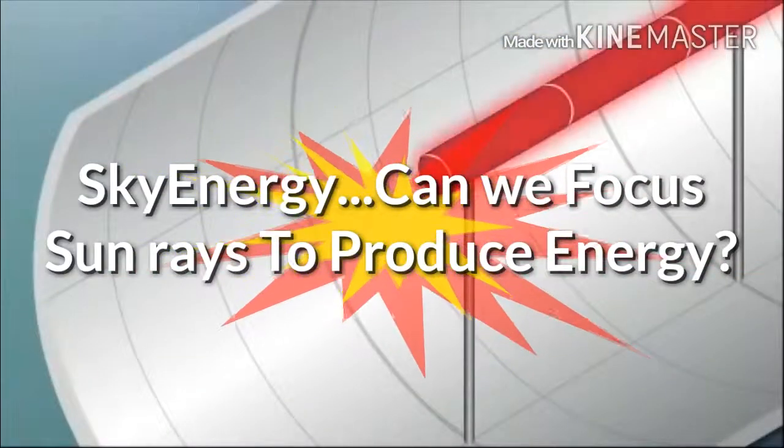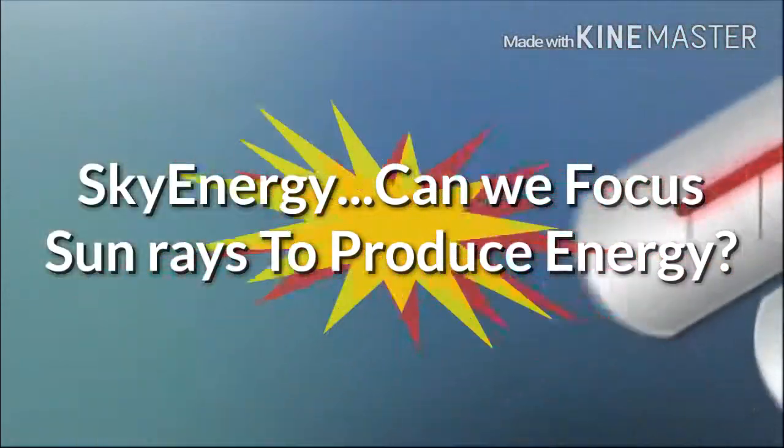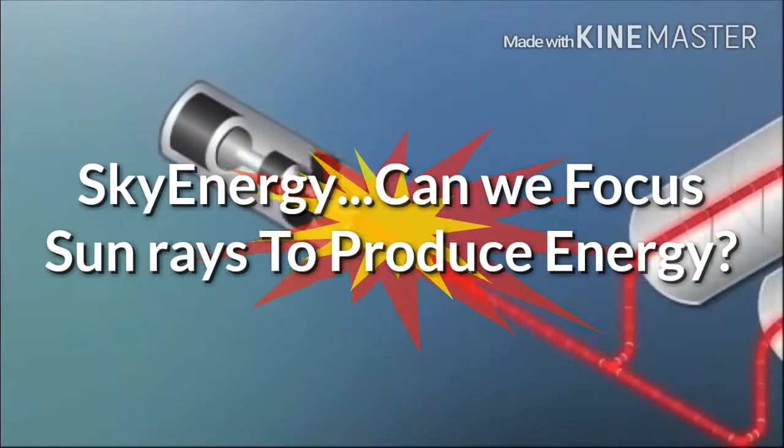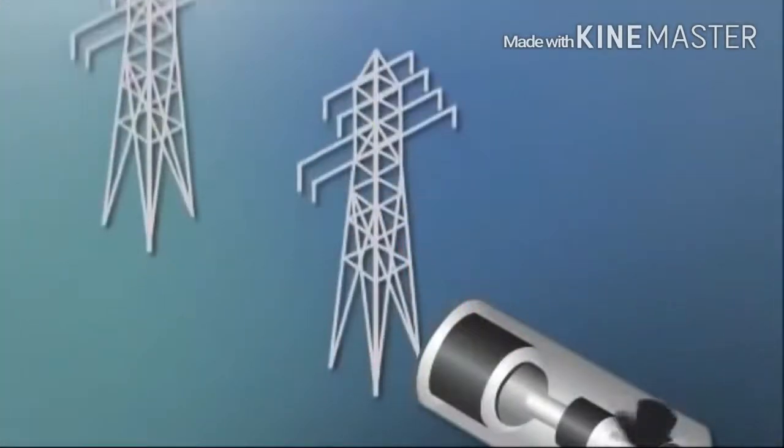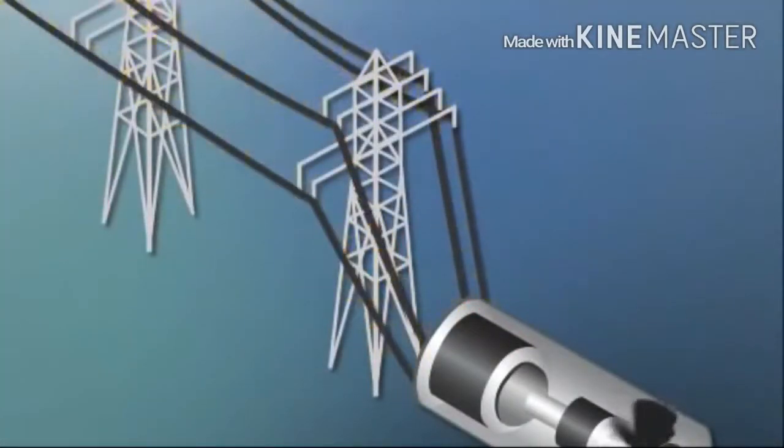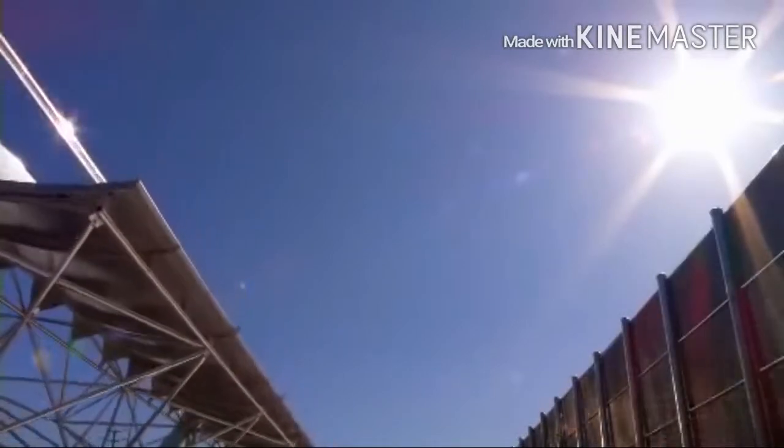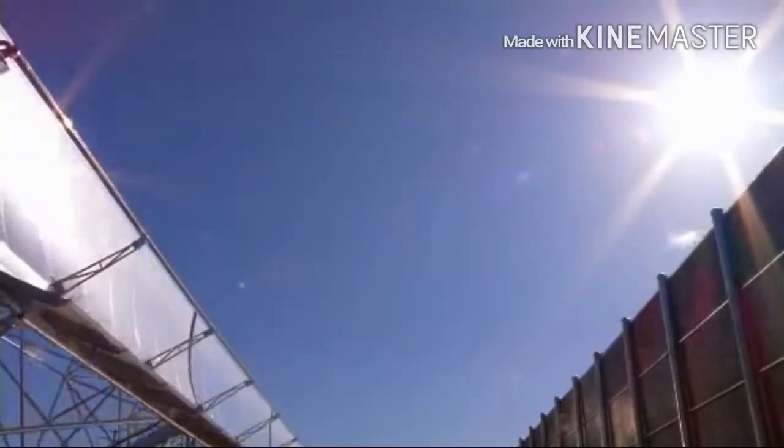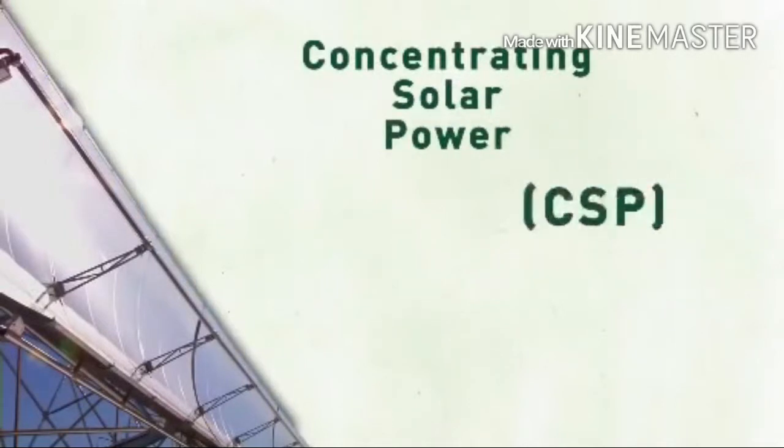Reflect it against a mirror, focus all of that heat on one area, send it through a power system, and you've got a renewable way of making electricity. It's called concentrating solar power, or CSP.